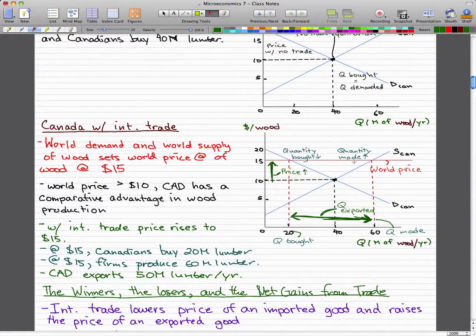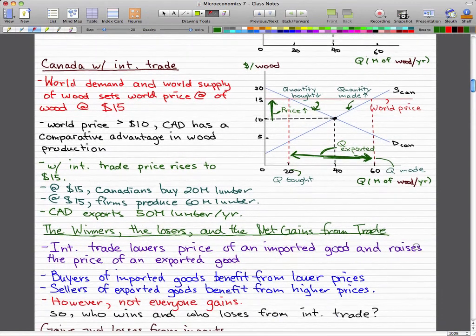Before the supply was 40, but increased to 60, and the quantity bought by domestic consumers actually decreased from 40 to 20. So what's left over is actually exported out to different places in the world.